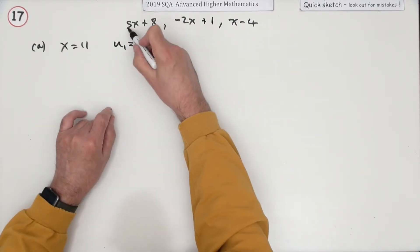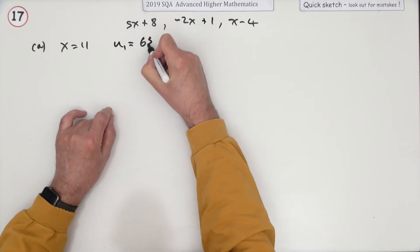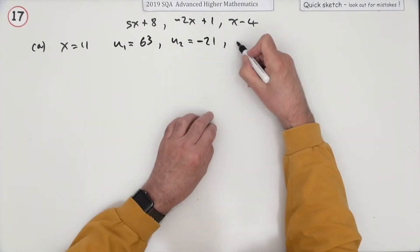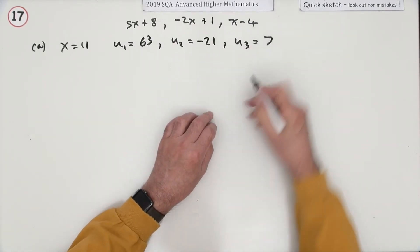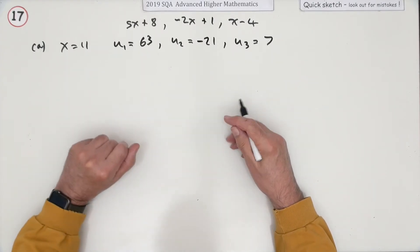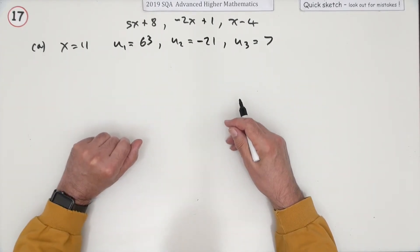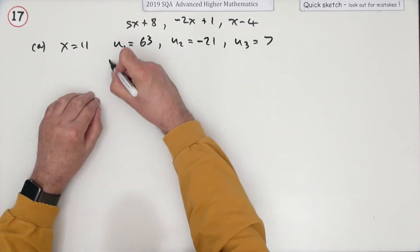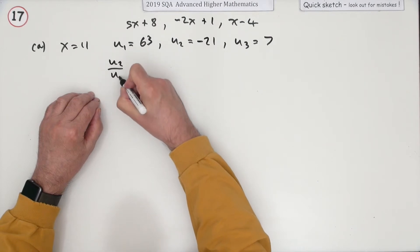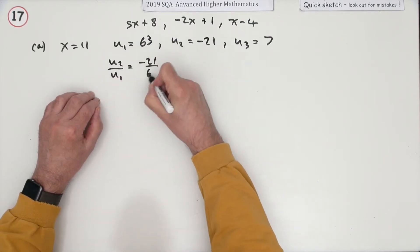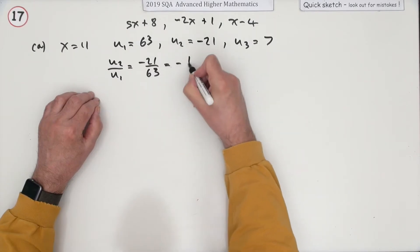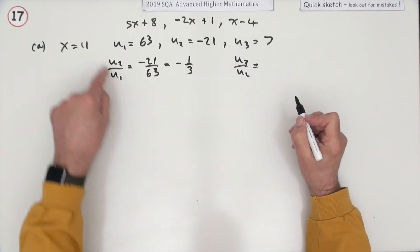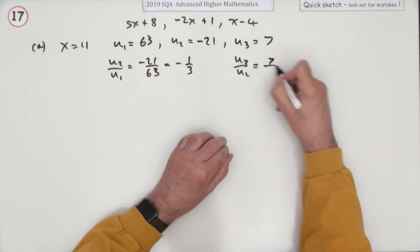When x is 11, u1 is 55 + 8 = 63, u2 is negative 22 + 1 = negative 21, and u3 is 11 take away 4 = 7. To check if they form a geometric sequence, we test whether the ratio of consecutive terms is the same in both cases. Dividing u2 by u1: negative 21 divided by 63 gives negative one third.